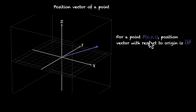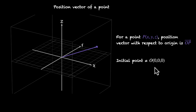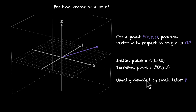So for a point P with coordinates x, y, z, a position vector with respect to the origin is the OP vector. The initial point is (0, 0, 0) and the terminal point is (x, y, z). This is usually denoted by the small letter p — if the point is capital P, then this vector is denoted by small letter p.